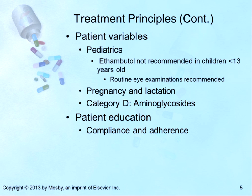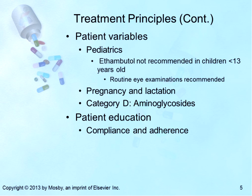For geriatric patients, they are at increased risk for toxic effects, especially on the liver and central nervous system. For pediatric patients, treatment of infants, children, and adolescents with TB is similar to that for adults, with one exception: ethambutol is not recommended unless routine eye exams can be performed. INH and rifampin are commonly used with children. Ethambutol is not recommended for children younger than 13 years unless benefit outweighs risk. Streptomycin is not recommended for use in children at all. Safety and dosage of cycloserine and ethionamide have not been established in the pediatric population.